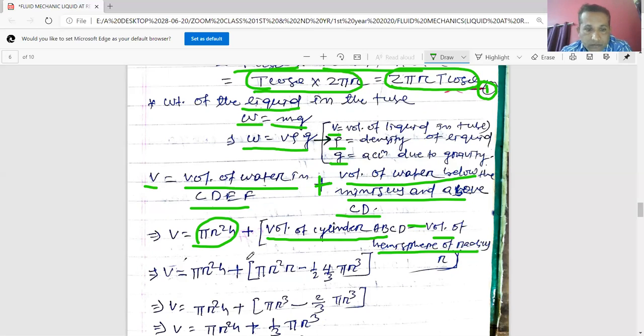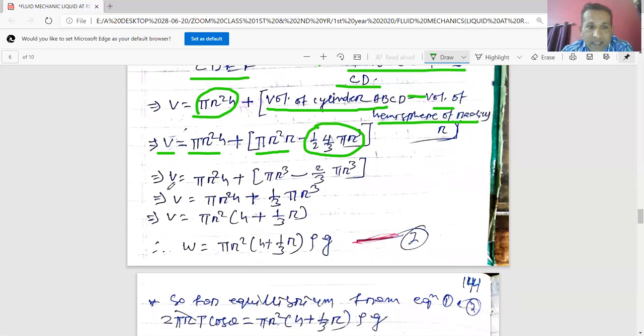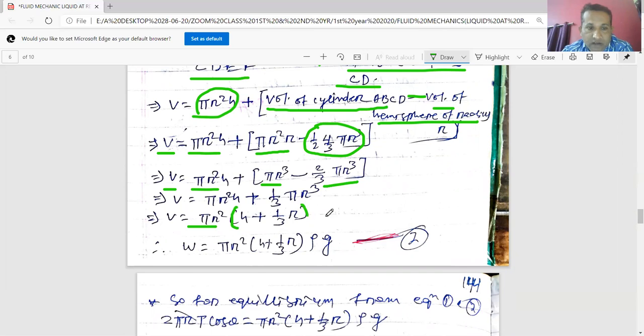So V equals πr²h plus πr³ minus volume of hemisphere: half into 4/3 πr³. So this is your πr²h, πr³ minus 2/3 πr³. So πr³ minus 2/3 πr³, it will be 1/3 πr³. So by taking common πr², it will become h plus 1/3 r. So W equals πr² into (h plus 1/3 r) ρg.